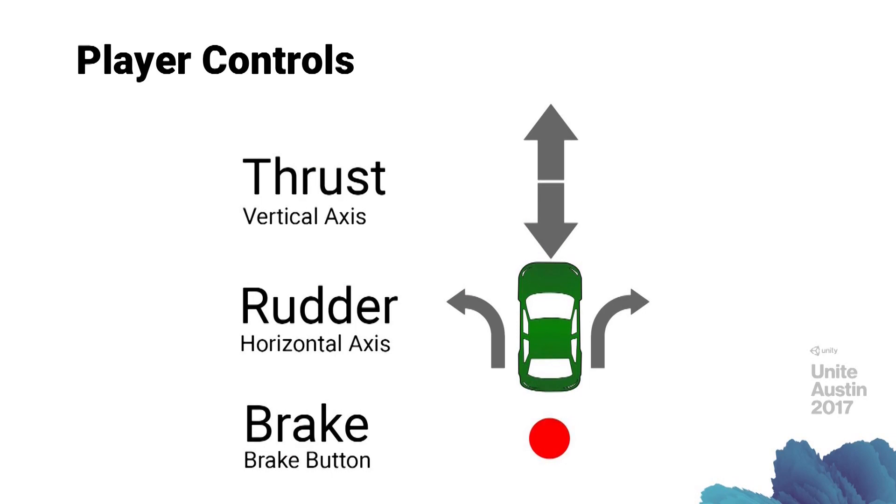There are some controls we're interested in — these are the things we're looking at from the player. We are interested in the vertical input axis, which we are going to map to thrust — the thrusters of the ship — what's going to propel it forward and backwards. We are interested in the horizontal axis, which is going to be our rudder. The rudder is going to be used to yaw the ship — rotate on the y-axis. And then finally, we are going to have a brake button, not an axis, to indicate whether we are applying the brake. Those are really the inputs we care about for this project — just these three.